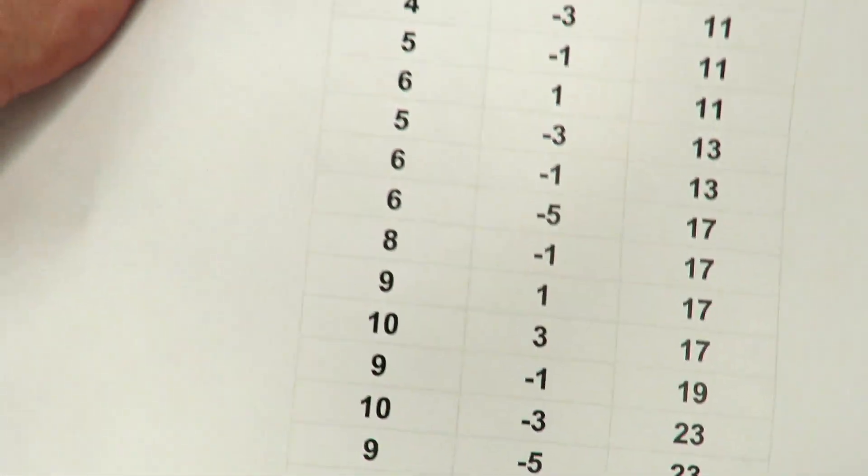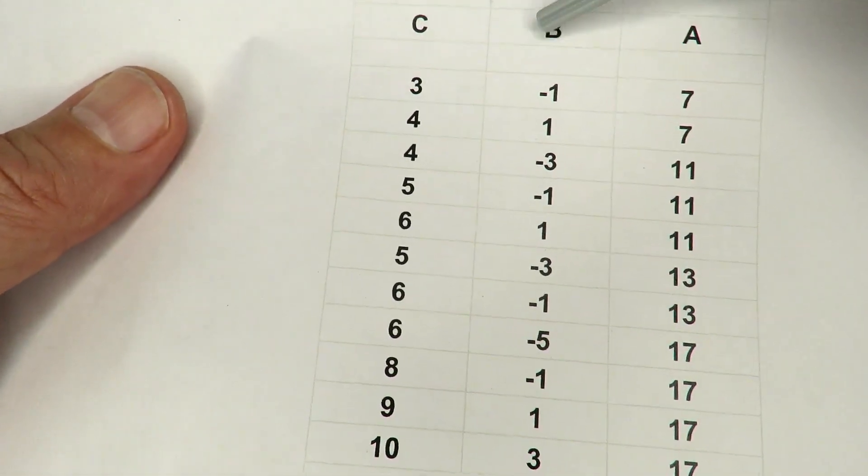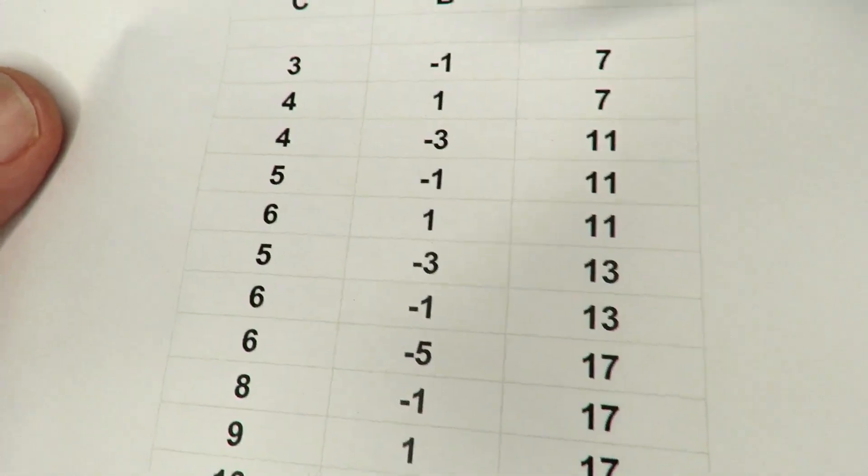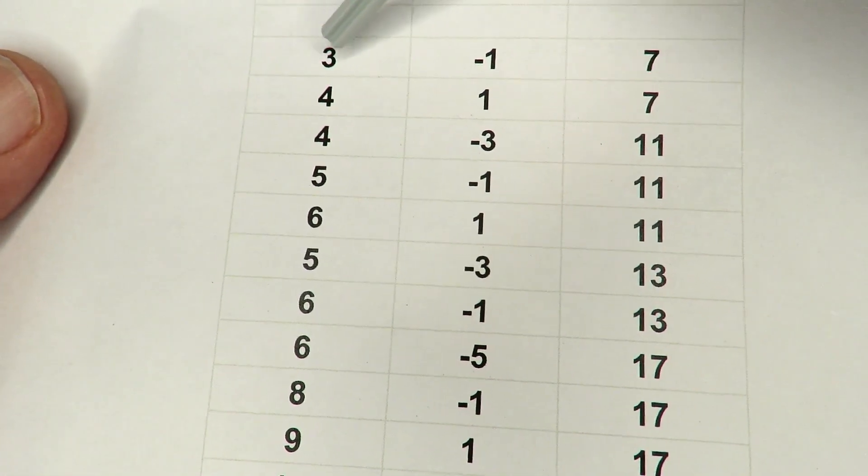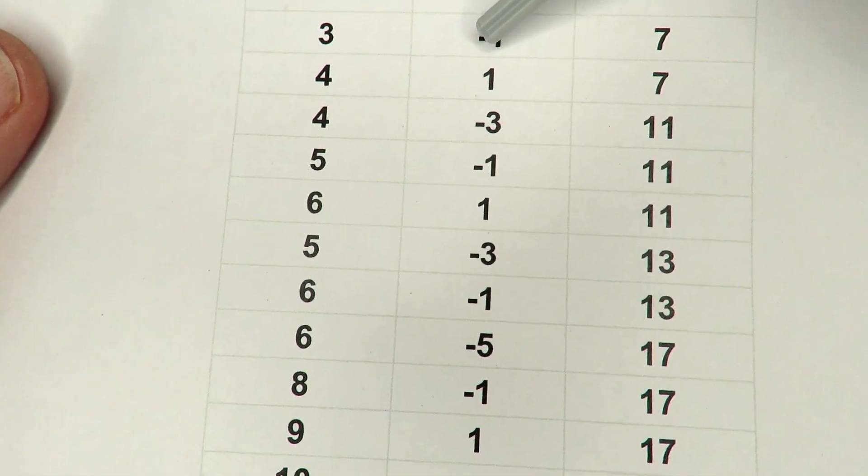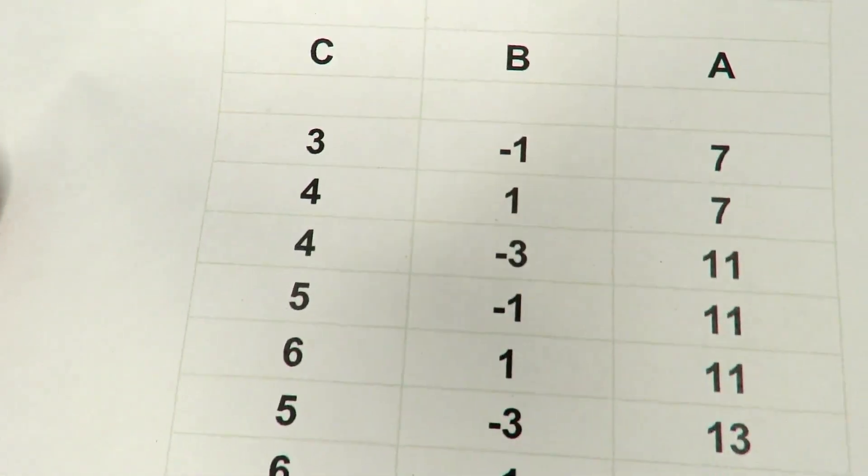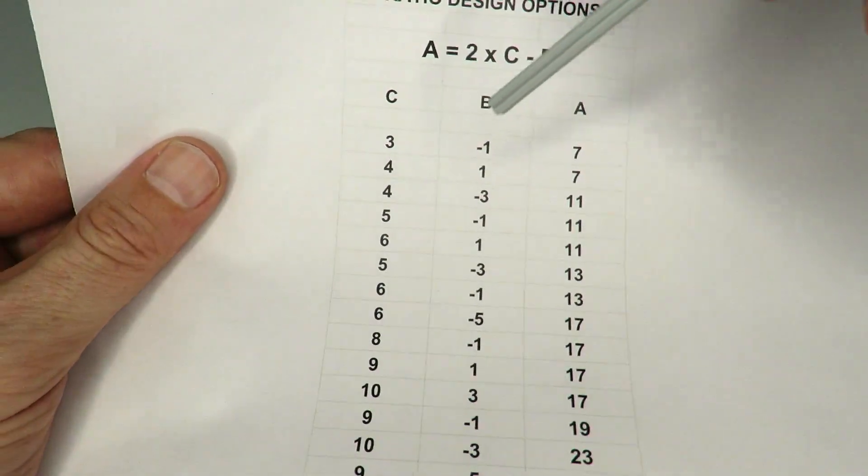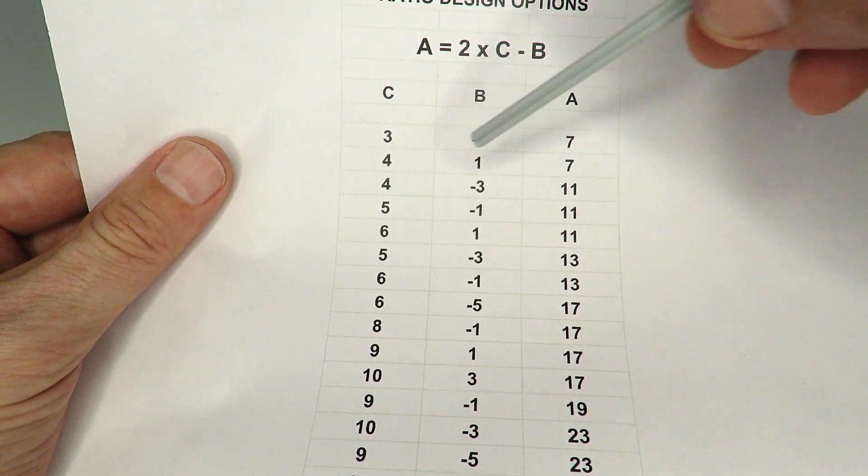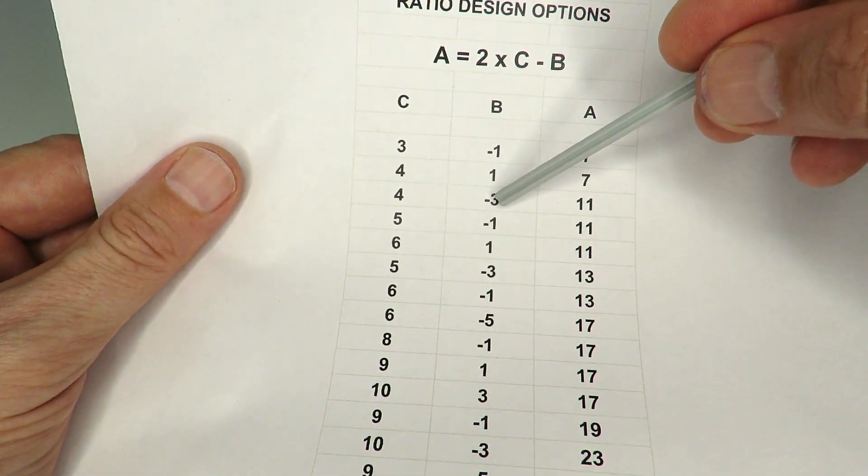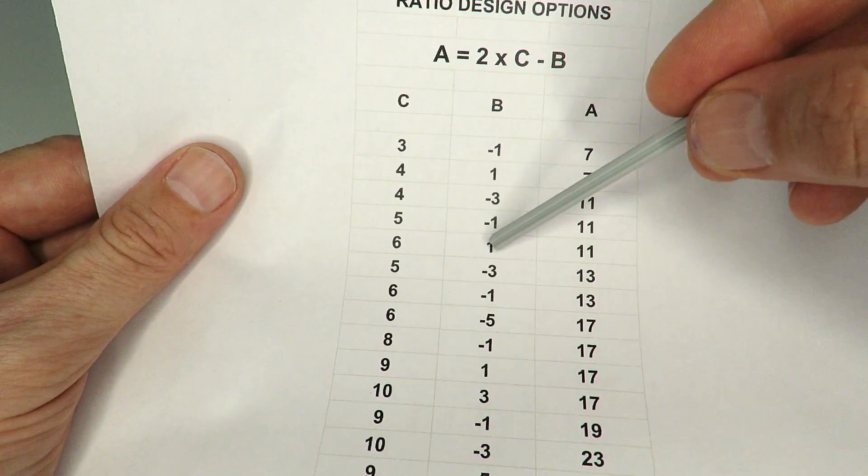Using different combinations of C and B. For example, we can create a 7 to 1 by using C equals 3 and B equals minus 1. Minus just means the gear is going in reverse. We can create 11 to 1 by using 4 and minus 3, or 6 and 1.